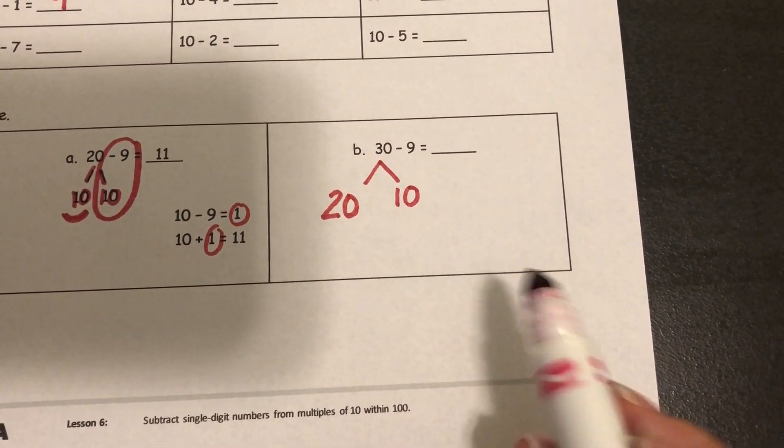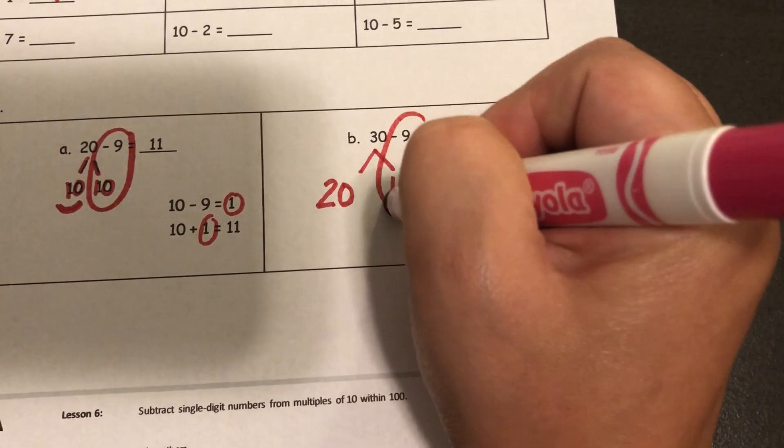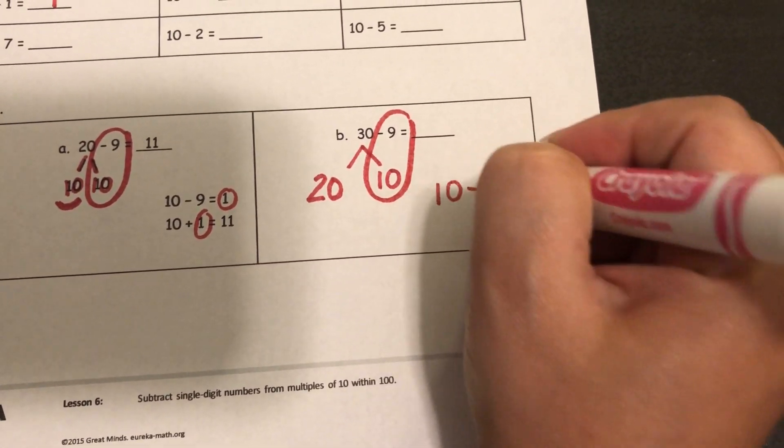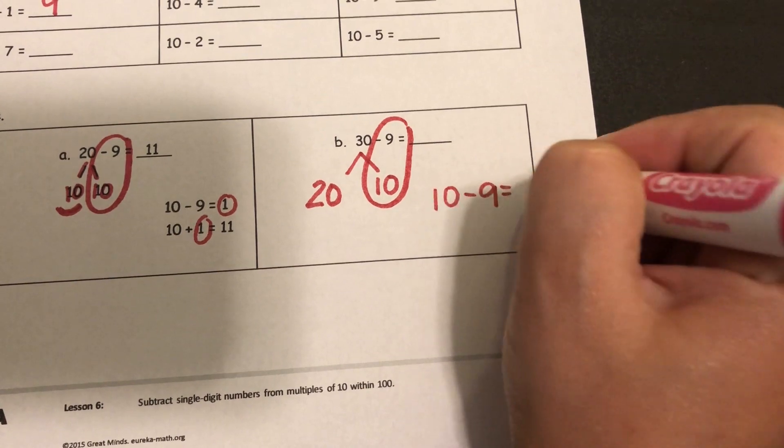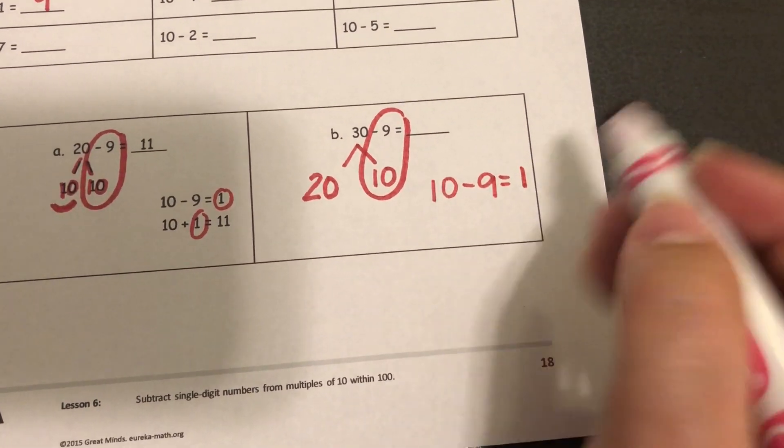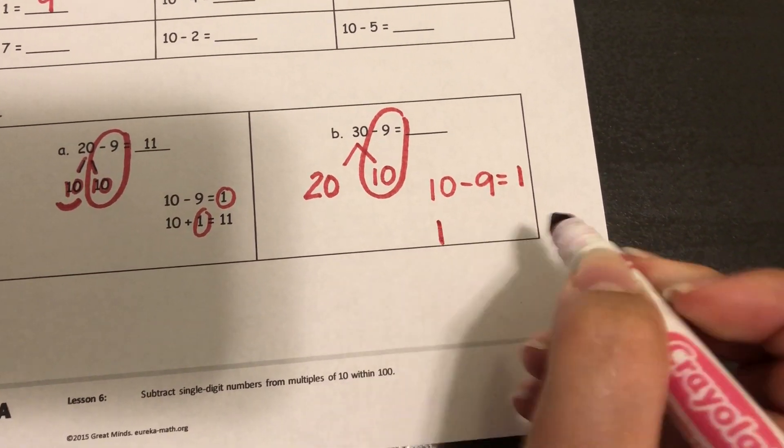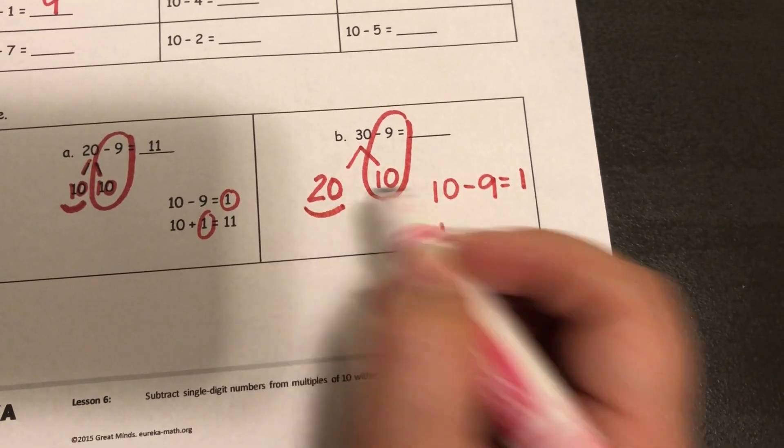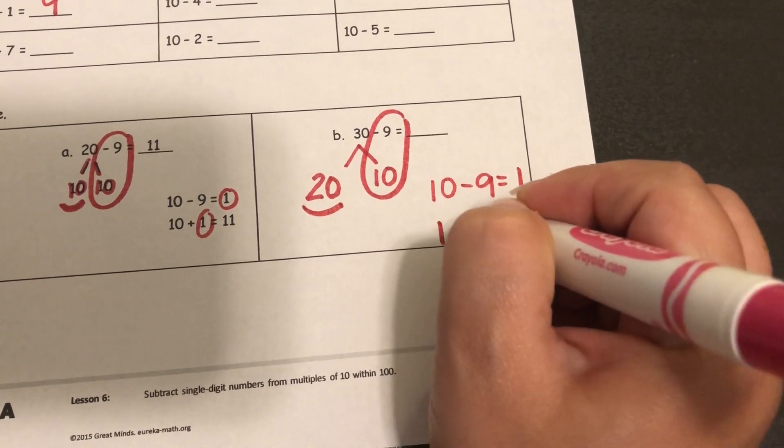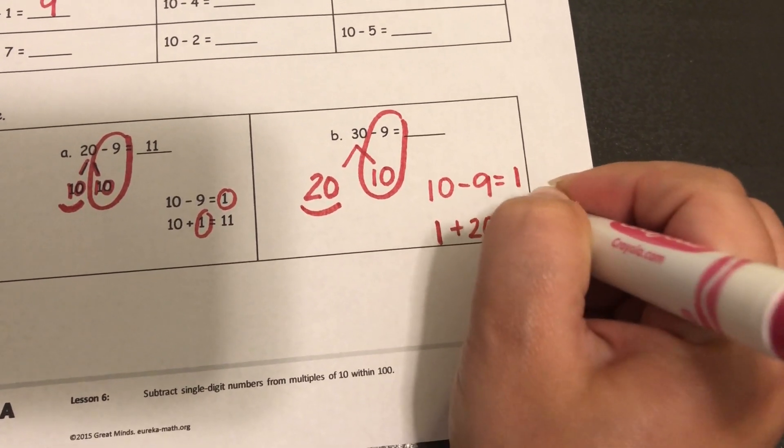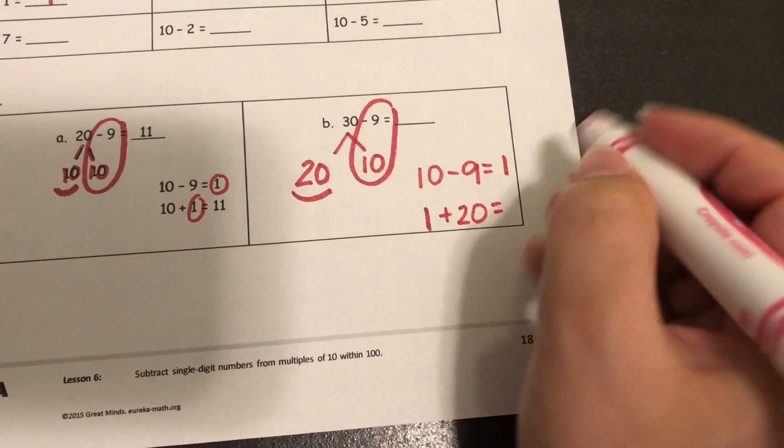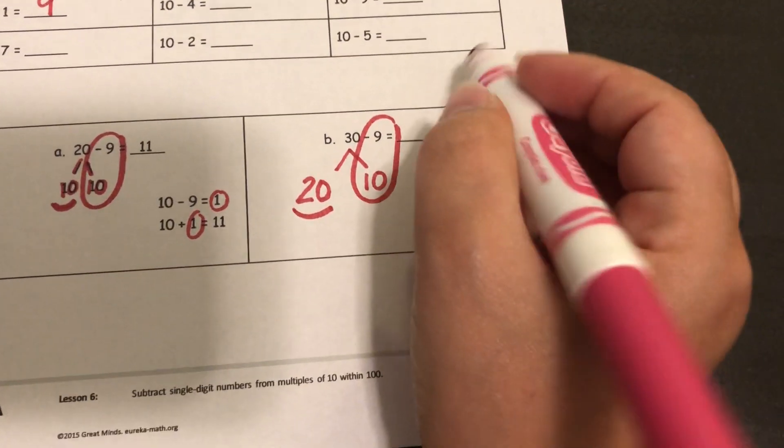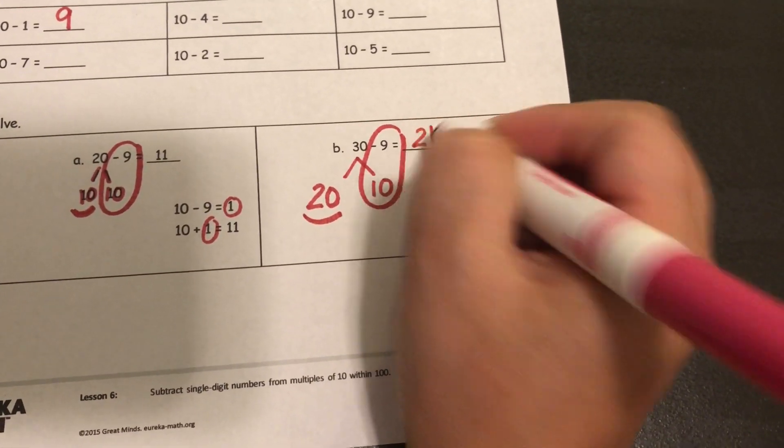Now I can do my subtraction. 10 minus 9 will give us 1. And I take this same 1 and I add what's left over. I had a 20 left over. 20 plus 1 will give me the answer of 21. And I can put it up here.